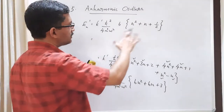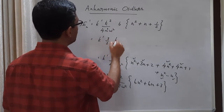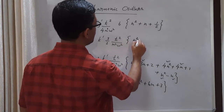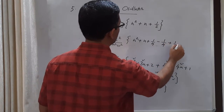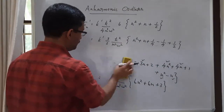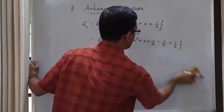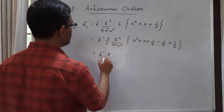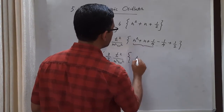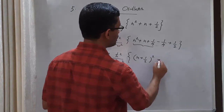So the first-order energy correction is k′(ħ²/4m²ω²) × (6n²+6n+3) = (3k′ħ²/2m²ω²)(n²+n+1/2). We can rewrite this neatly by completing the square: introduce +1/4 − 1/4, giving n²+n+1/4 = (n+1/2)², so the expression becomes (3k′ħ²/2m²ω²)[(n+1/2)² + 1/4].